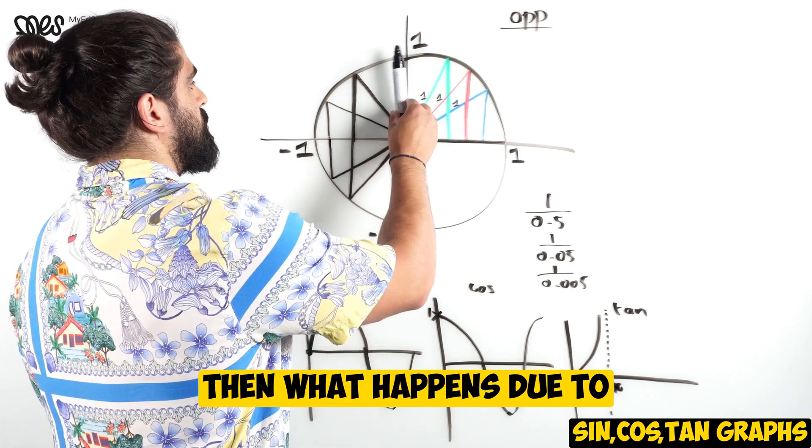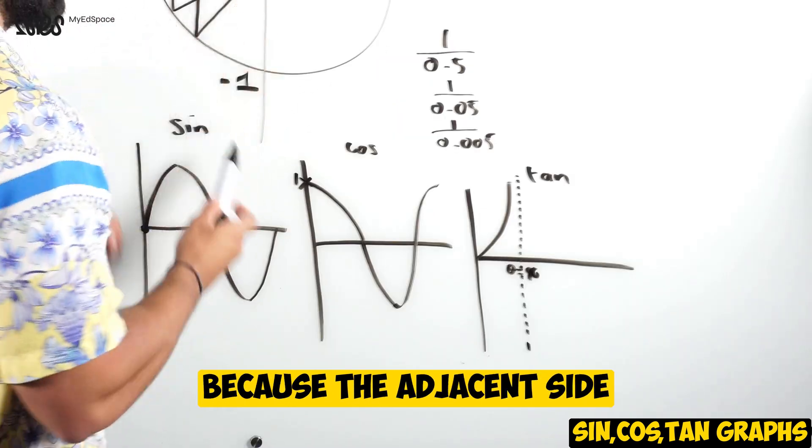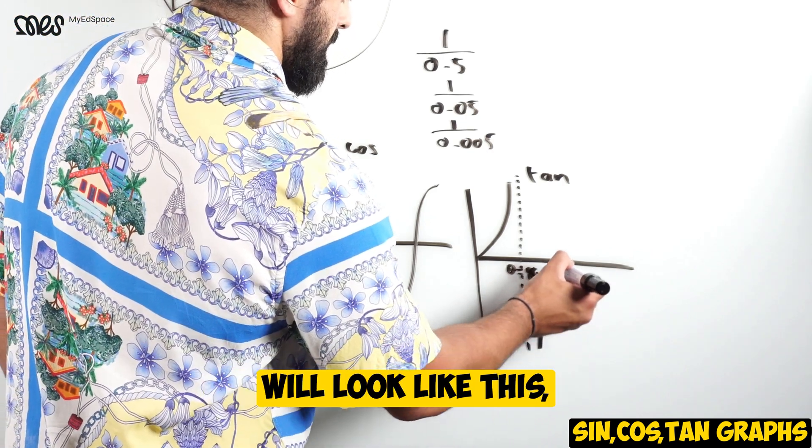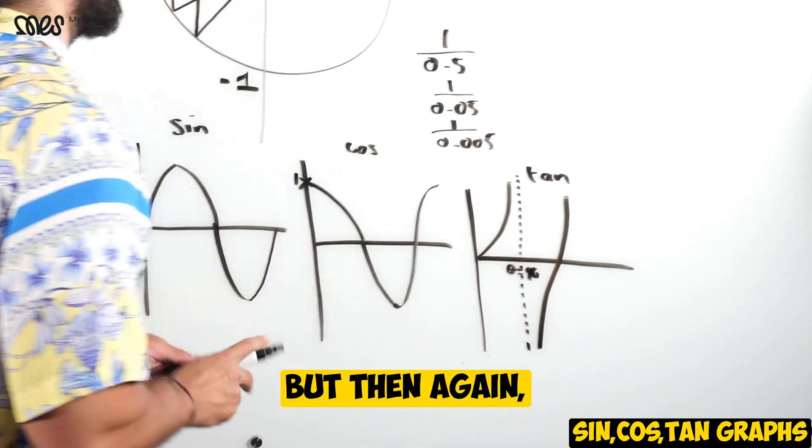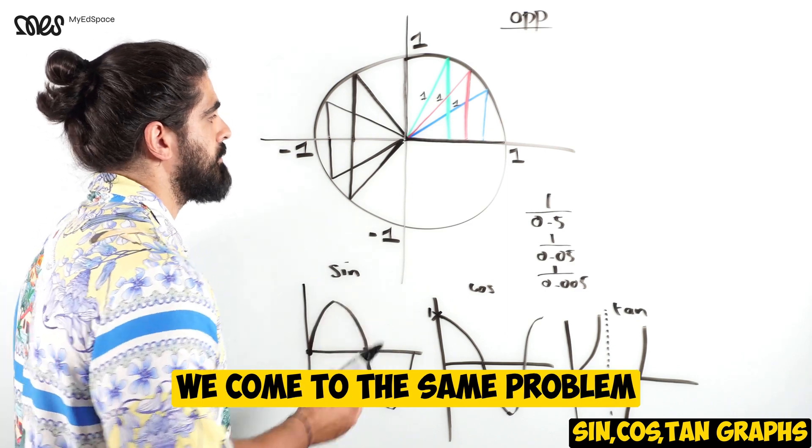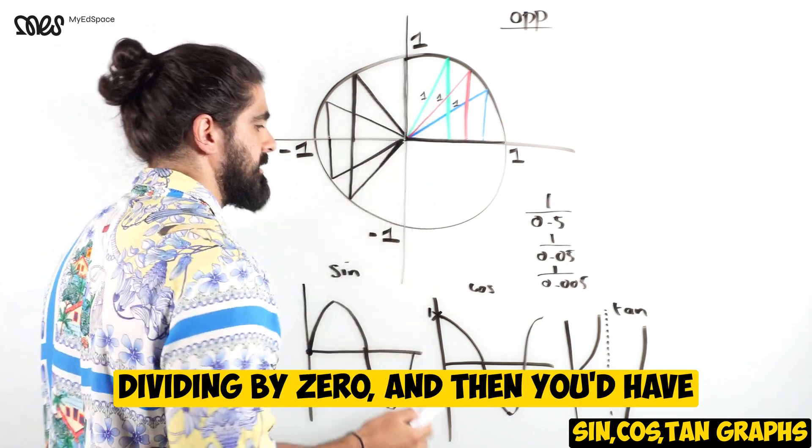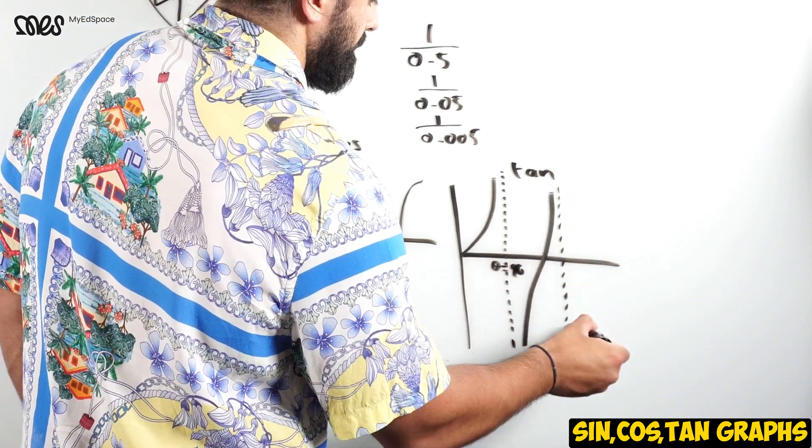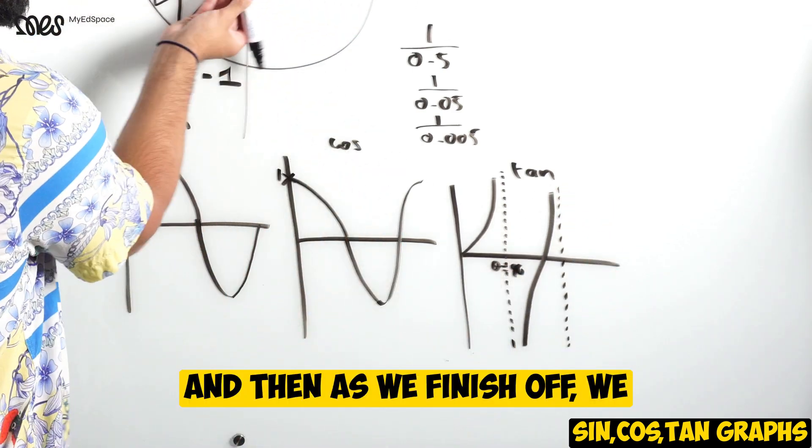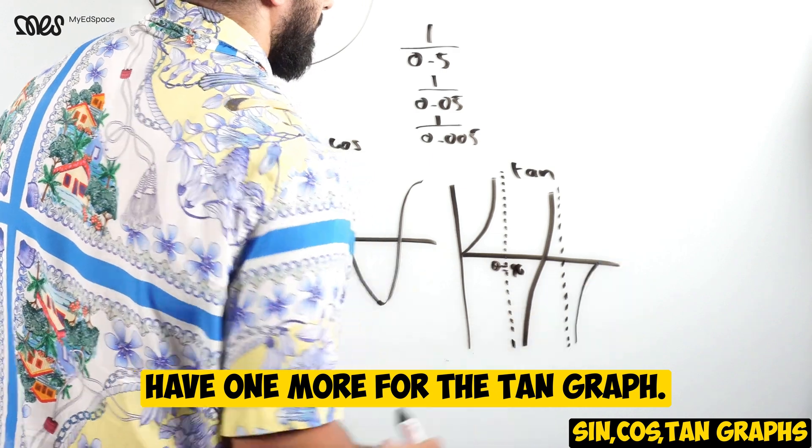Then what happens, due to symmetry, is it just repeats the same thing. But because the adjacent side is negative, the tan graph will look like this but with negative values. But then again we come to the same problem over here where you'd be dividing by 0, and you'd have another asymptote. And then as we finish off, we have one more for the tan graph.